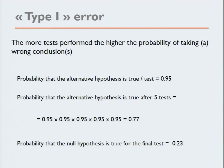The problem is that the more tests performed, the higher the probability of taking a wrong conclusion. The probability that the alternative hypothesis is true is 95 percent for a single test, but if you take five tests, you have to multiply — the overall probability of the alternative hypothesis being true becomes 0.77, and the real p-value for all these tests is 0.23, no longer 0.05. So you have an inflation: the more tests you perform, the more probability that you will find something.